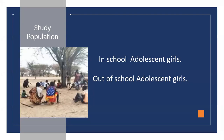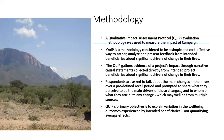The study population included adolescent girls who are in school across three schools, and adolescent girls who are not in school — either because they are married or for various other reasons. Regarding the QUIP methodology: QUIP stands for Qualitative Impact Assessment Protocol. It is a methodology used to measure the impact of the campaign and is considered a simple and cost-effective way to gather, analyze, and present feedback from intended beneficiaries.